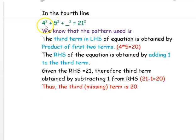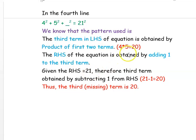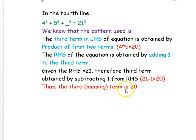In the fourth line, it is given 4² + 5² + (dash)² = 21². The third term on the left-hand side is obtained by multiplying the first two terms: 4 × 5 = 20. The right-hand side is obtained by adding 1 to the third term: 20 + 1 = 21, which matches the given value. Alternatively, the third term can be found by subtracting 1 from the right-hand side: 21 − 1 = 20. Thus, the missing third term is 20.